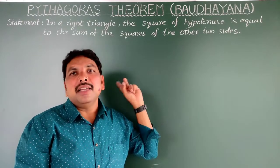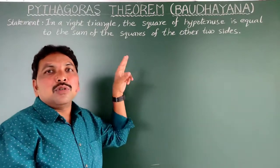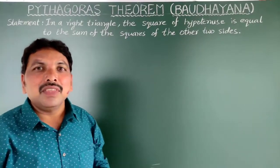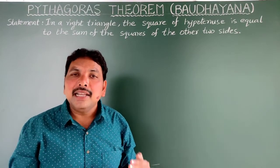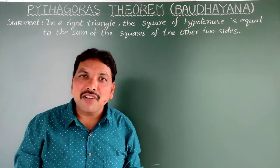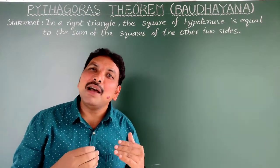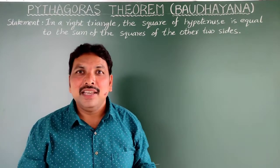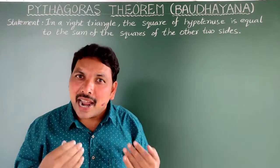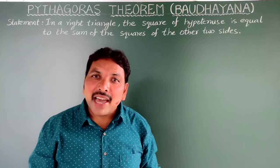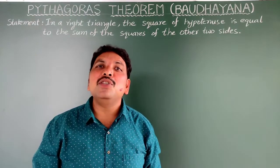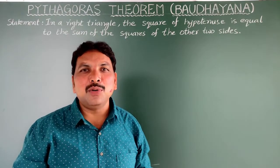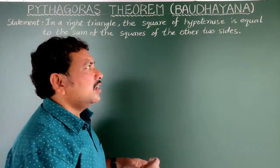Let us prove this one. Let us go through the statement. What is the statement? In a right-angled triangle, the square of the hypotenuse is equal to the sum of the squares of the other two sides. Let us prove this one.